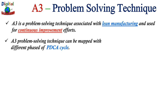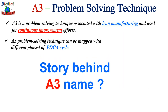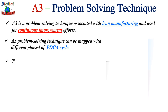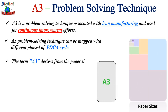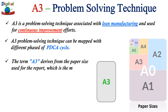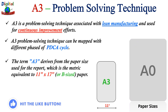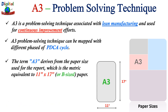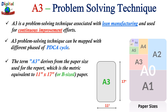The term A3 is derived from the European paper size, which is about the same size as an American 11-inch by 17-inch, or B-size paper. Using the A3 method, a team can create a one-page improvement project report. By limiting the report to one page, the team is more focused — concise and thoughtful about including only relevant information, making the report easy to digest and relevant to other stakeholders.